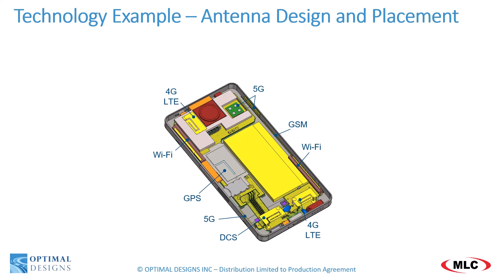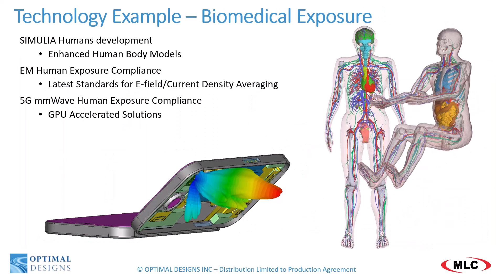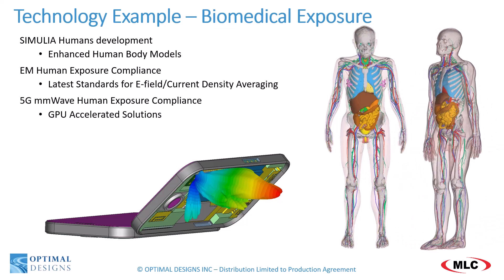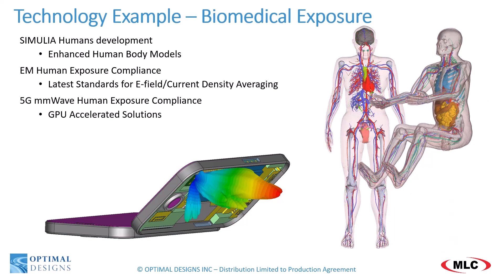A common technology example is antennas. In this slide we see a common mobile phone which operates with six different antennas. CST allows not only the design of a single antenna, but also the complete operating analysis of the phone and whether interference and violations exist. Another technology example related to antennas is biomedical exposure. CST includes a library of biomedical models as well as post-processing templates for exposure analysis.